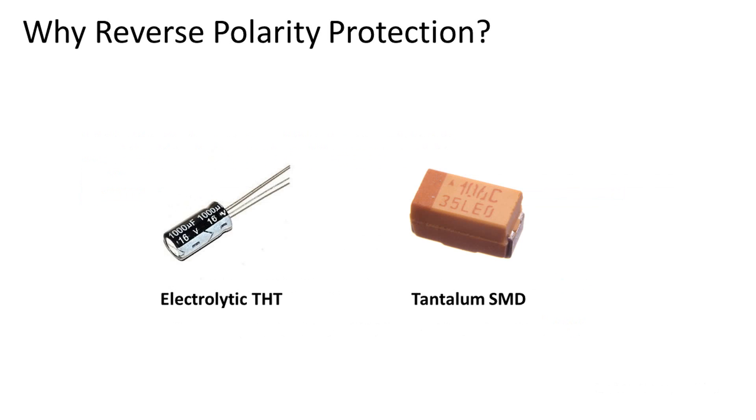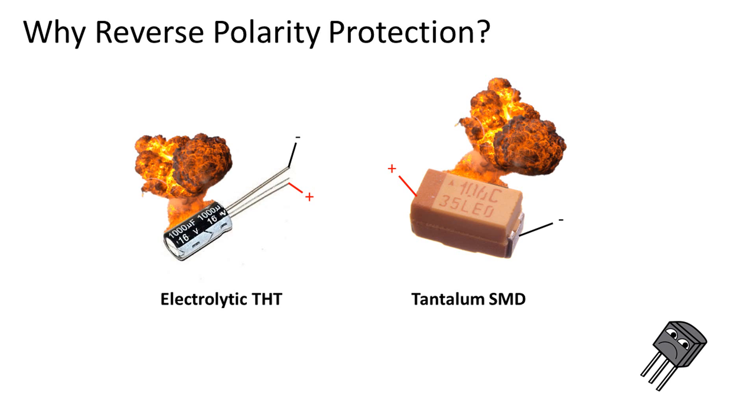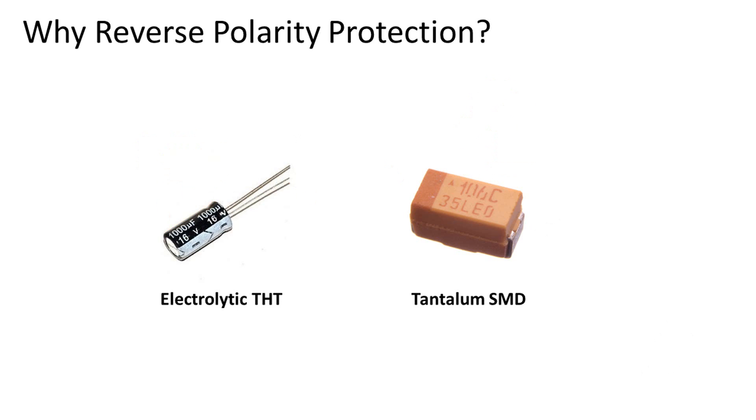Another example is polarized bypass capacitors, like electrolytic or tantalum capacitors on the power rails. Reversing the DC polarity on these can cause permanent damage or in some cases explosions. To make sure our circuits won't get damaged, we implement reverse polarity protection at the input of the DC supply.